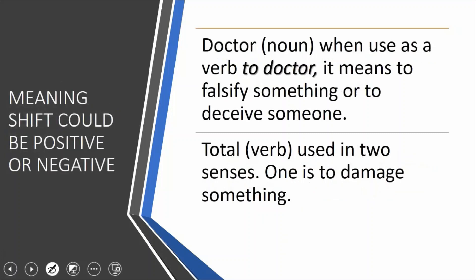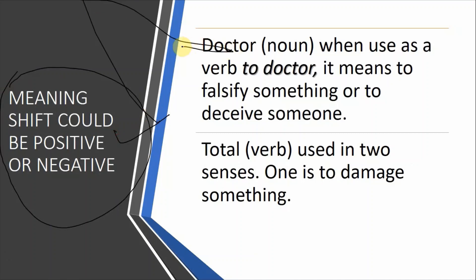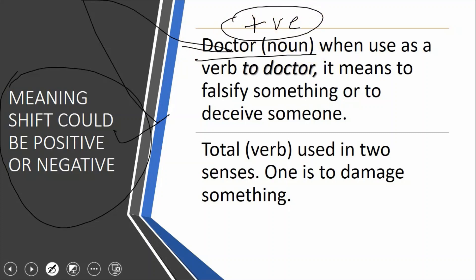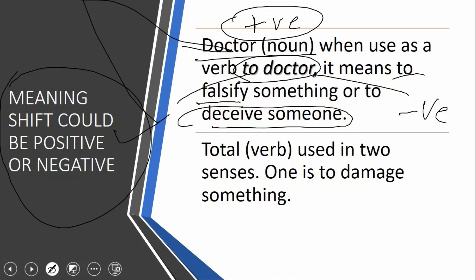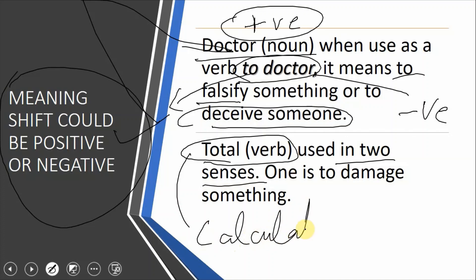Meaning shift could be positive or negative — یعنی کبھی کبھی ایک category میں meaning positive ہوتا ہے لیکن دوسری میں negative۔ مثلاً doctor as a noun positive sense میں ہے، لیکن to doctor as a verb negative sense میں آتا ہے — اس کا مطلب ہے to falsify something یا to deceive someone: he doctored me یعنی he deceived me۔ Total as a verb دو senses میں use ہوتا ہے: ایک مطلب ہے calculate، اور دوسرا to damage — جیسے he totaled the car یعنی اس نے car کو damage کر دیا۔